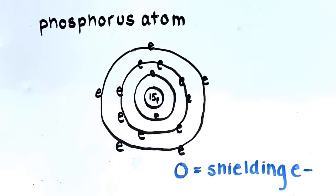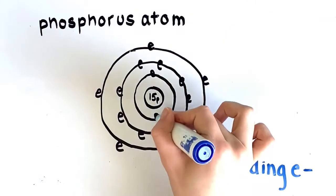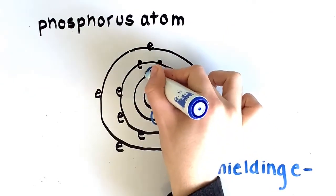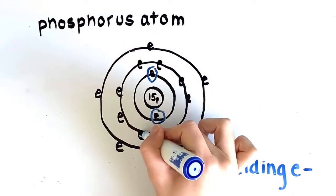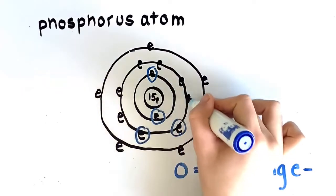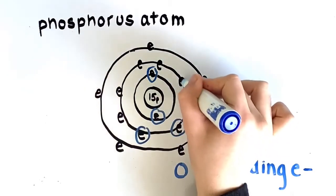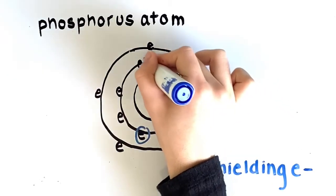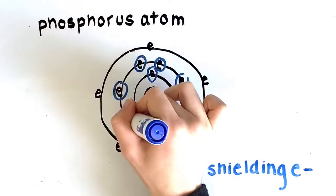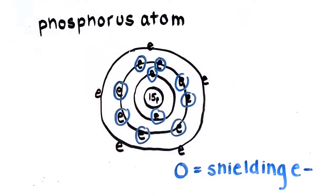We also need to understand what shielding electrons are. Shielding electrons are the electrons found on the shells between the nucleus and the valence electrons. They shield the attractive force between the outer electrons and the nucleus. Because of this shielding effect, the valence electrons feel less pull from the nucleus.